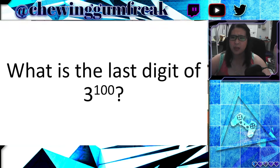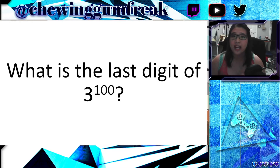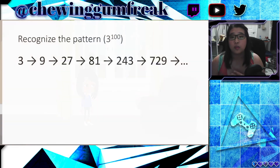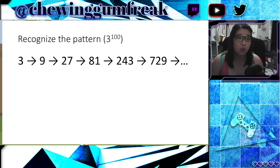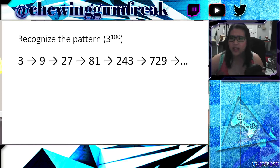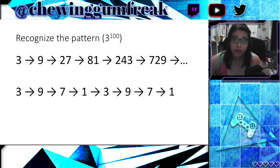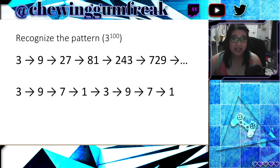This number obviously is way too big to be calculated in a regular calculator. Even if you try to type it into Google, you'll get the first few digits and then nothing else after that. But what you can do is start to write out some of the numbers that you know, or use the calculator to determine them. For this, you have 3, followed by 3 times 3 which is 9, times 3 is 27, times 3 is 81, and so on. And what you can see as you write these numbers down is that we have a pattern with the last digit.